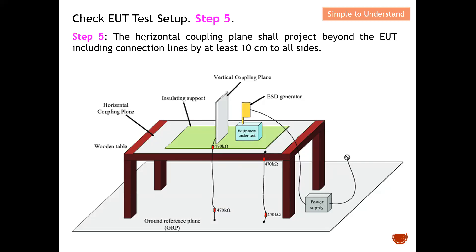Step number five: the horizontal coupling plane should project beyond the EUT — including all connecting lines — by at least 10 centimeters on all sides. If you have a large EUT, ensure it still maintains at least 10 centimeters clearance all around within the horizontal coupling plane.